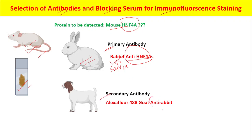As an example here, we have anti-rabbit. What should be the source of the secondary antibody? The source of the secondary antibody should ideally be neither mice nor rabbit, so it can be — for example — goat. The color we have used here is Alexa Fluor, and the color you choose depends on your experimental conditions and the kind of signal you want to see.